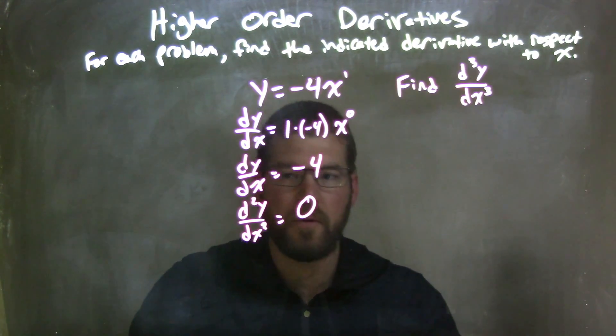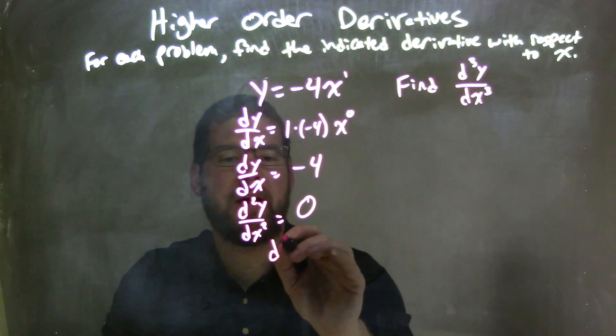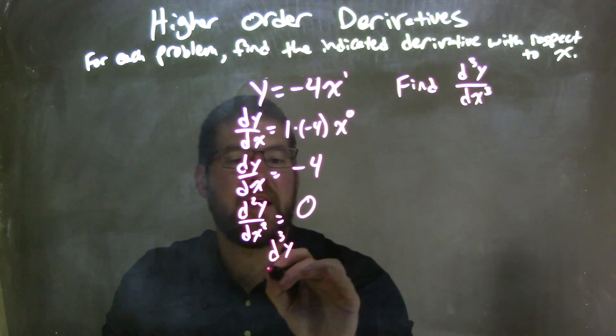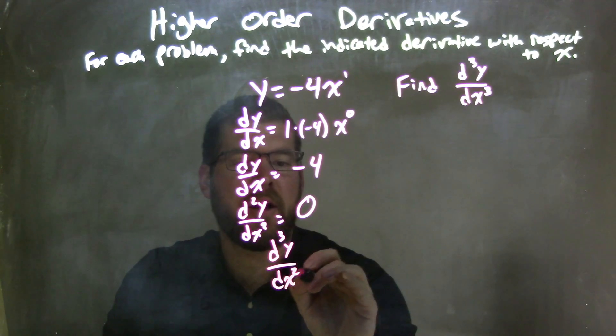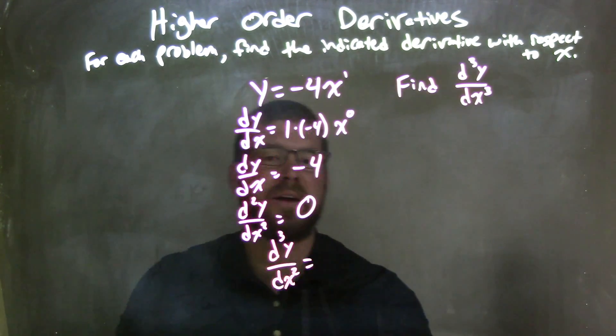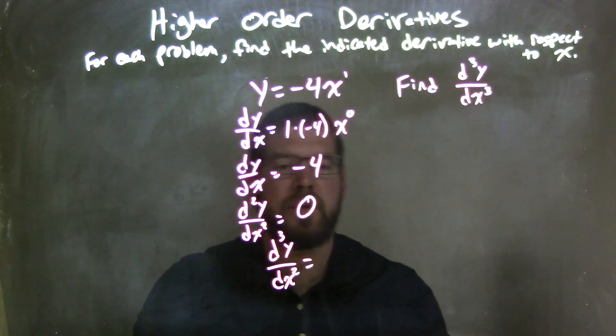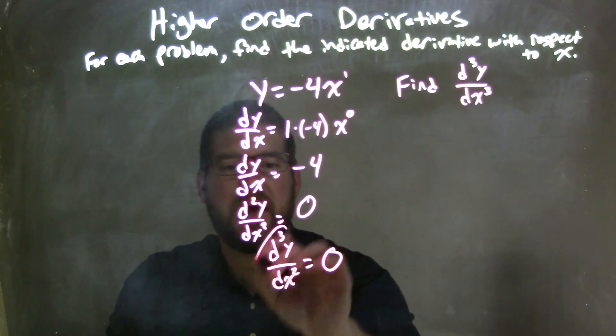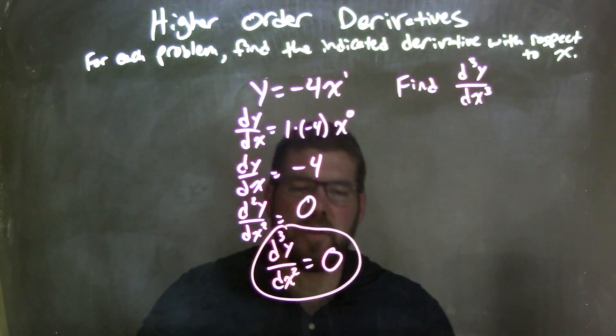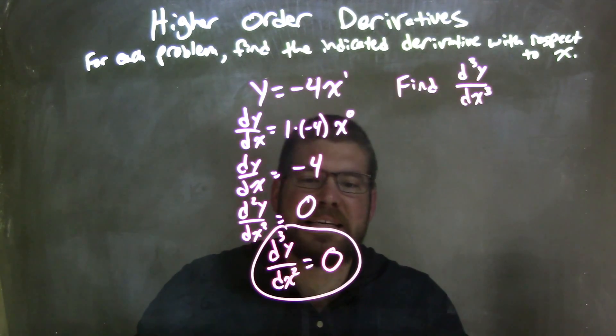But I need to find the third derivative, and this is where it really doesn't matter how many derivatives you take. Every single derivative from here on out is just going to equal 0 because the derivative of a constant is 0. And there we have it. Final answer: The third derivative of y is 0.